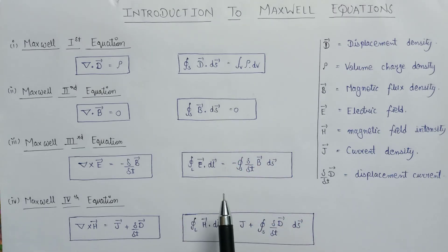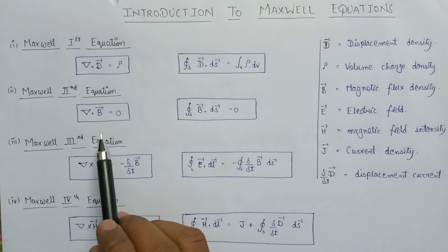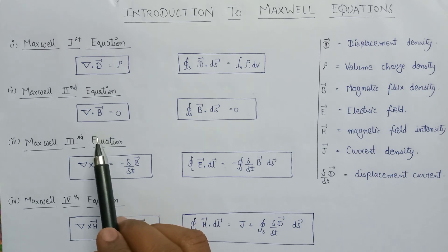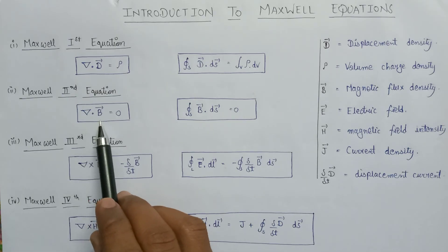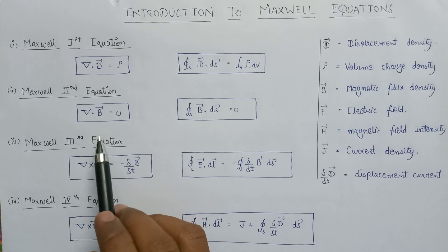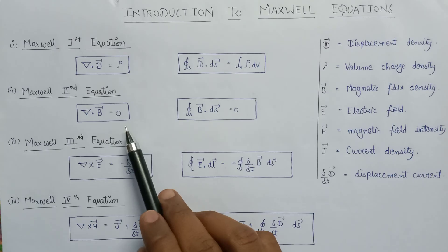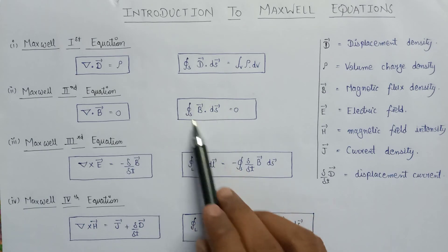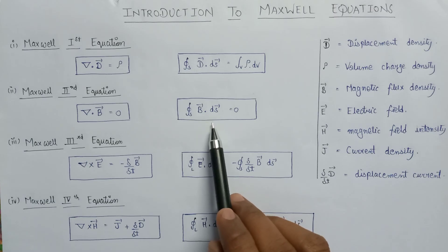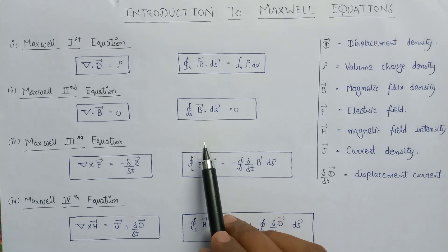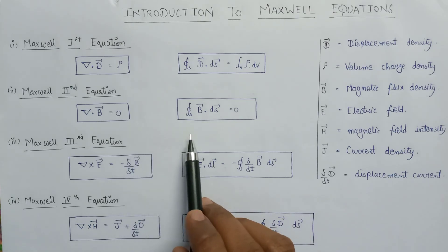Now let us look at Maxwell's 2nd equation. The Maxwell 2nd equation is based on Gauss's law of magnetostatics. According to the Maxwell 2nd equation, the divergence of the magnetic flux density is equal to zero. Here is the Maxwell 2nd equation in differential form, and here is the expression for the Maxwell 2nd equation in integral form.